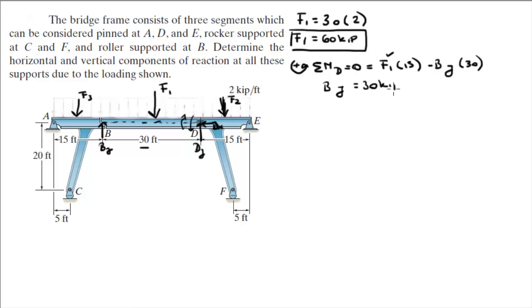Okay. Then, you know, sum of the forces in the Y is equal to 0. As you can see, you've got BY going up plus DY minus F1 is equal to 0.